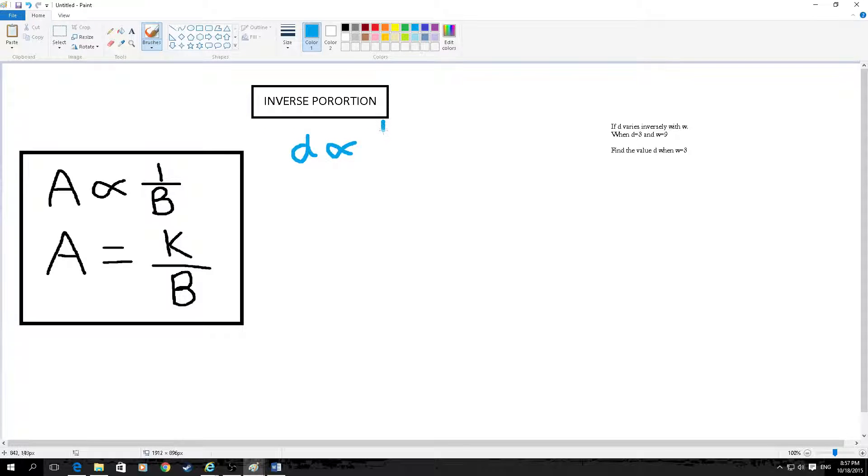D, so it's 1 over w. And then you put the numbers in. So it's 3 equals k over 9.